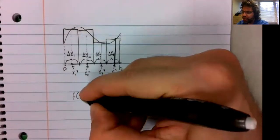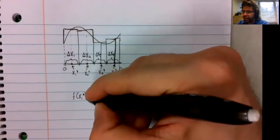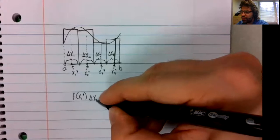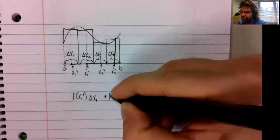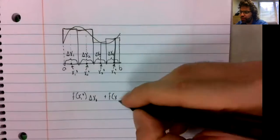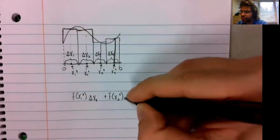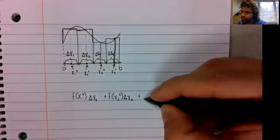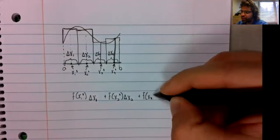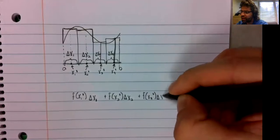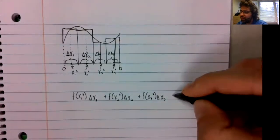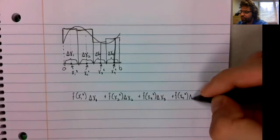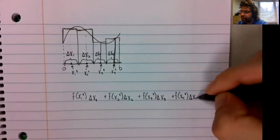So the area of the first rectangle is the height times the width. The area of the second rectangle is the height times the width. The area of the third rectangle is the height times the width. And the area of the fourth rectangle is the height times the width.